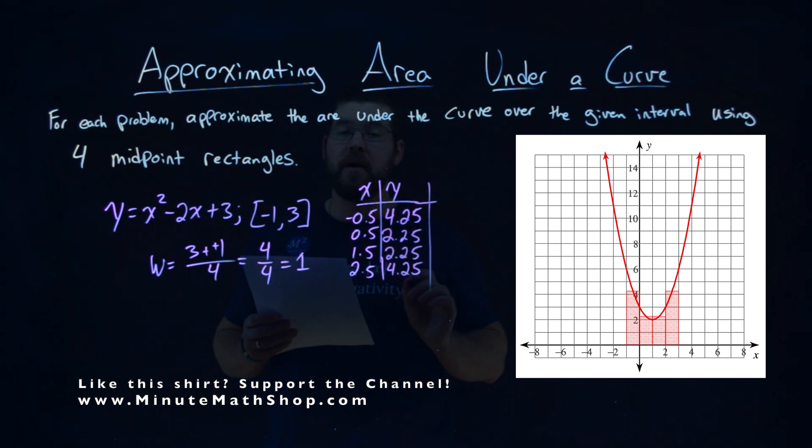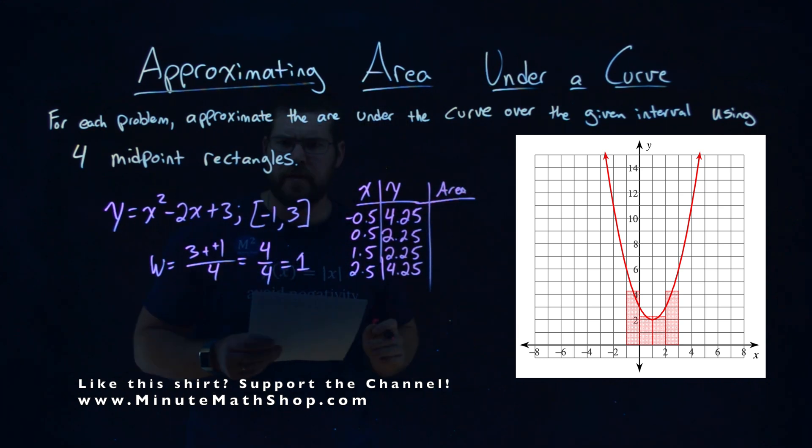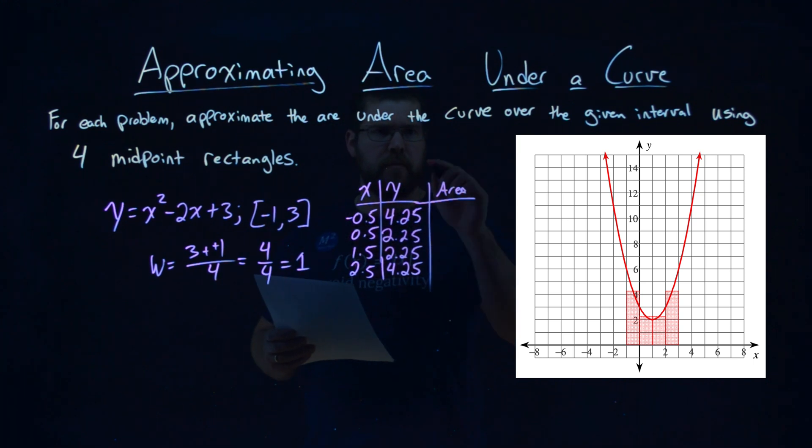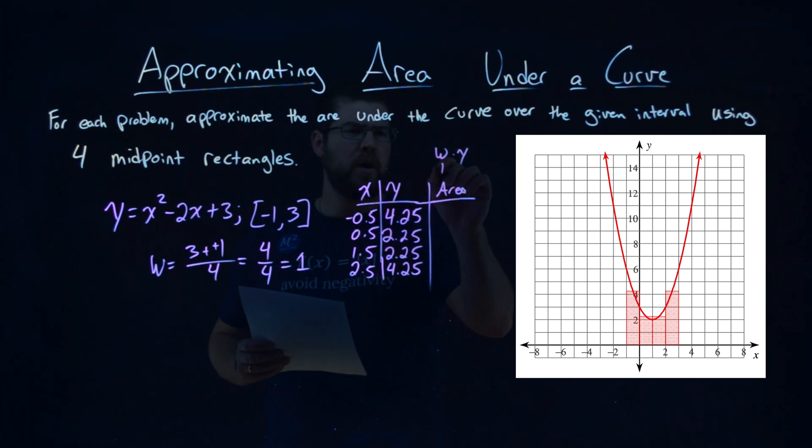Now from there, we want to find the area of each rectangle. Well, that should be fairly simple. The area of the rectangle is the width times the height, or width times the y-value, right? And our width is always going to be 1 for each one.